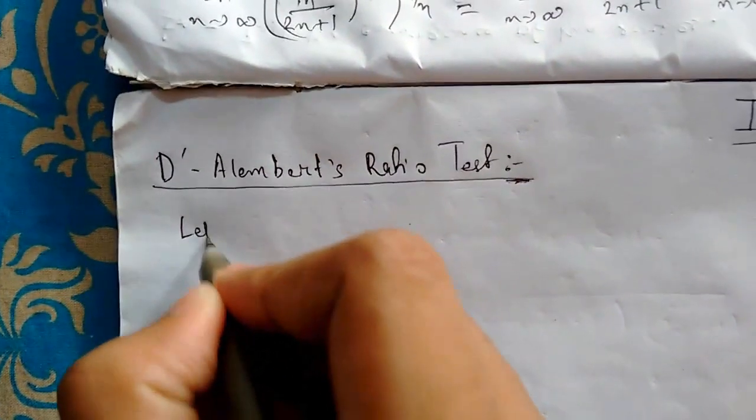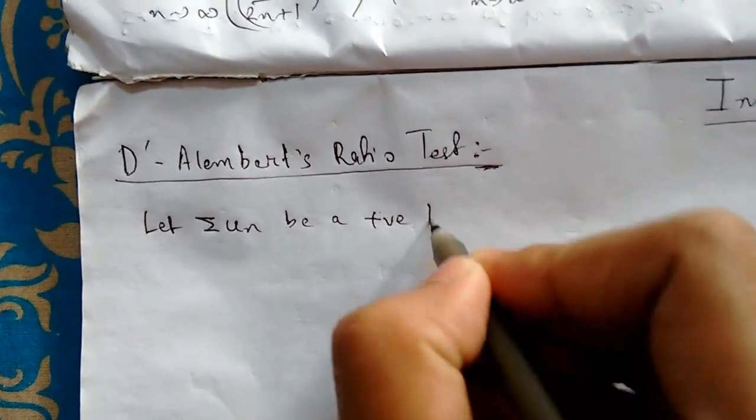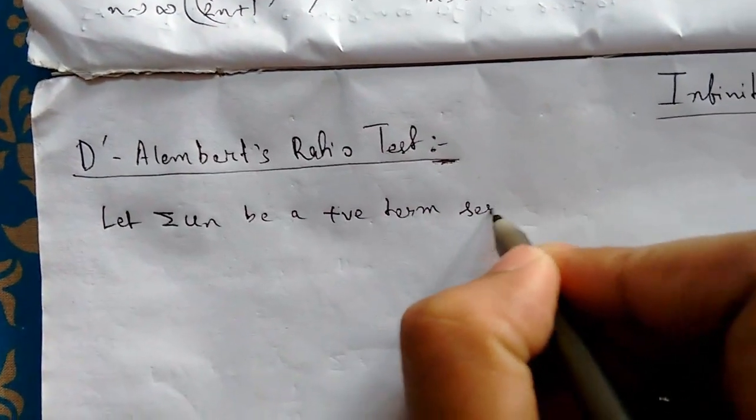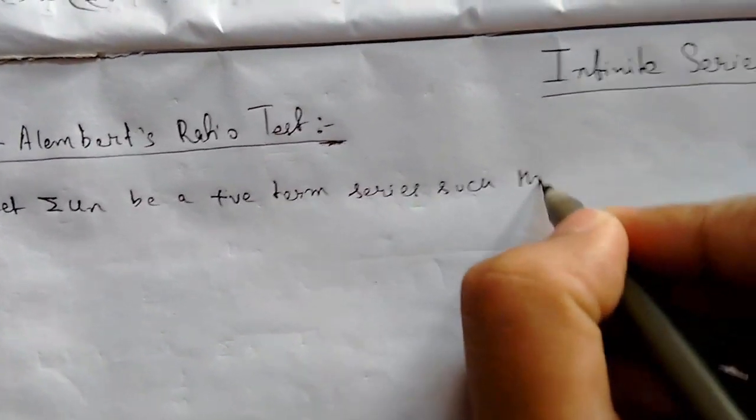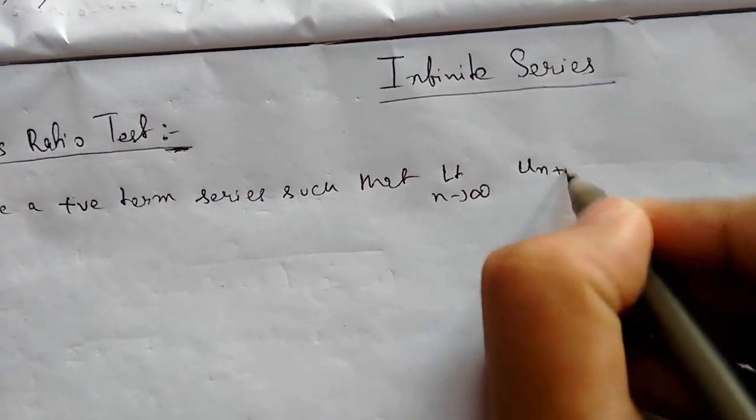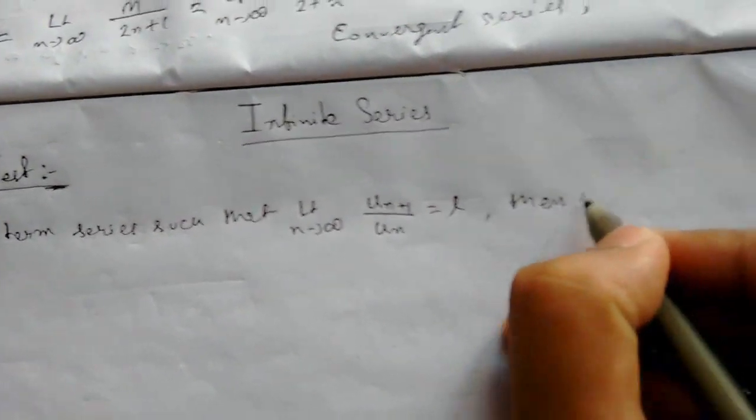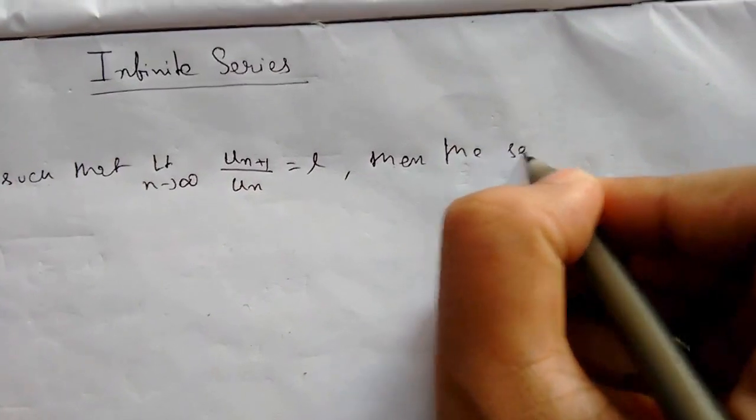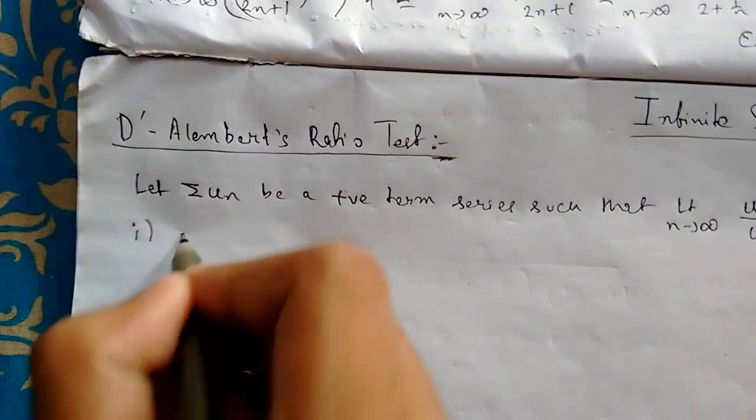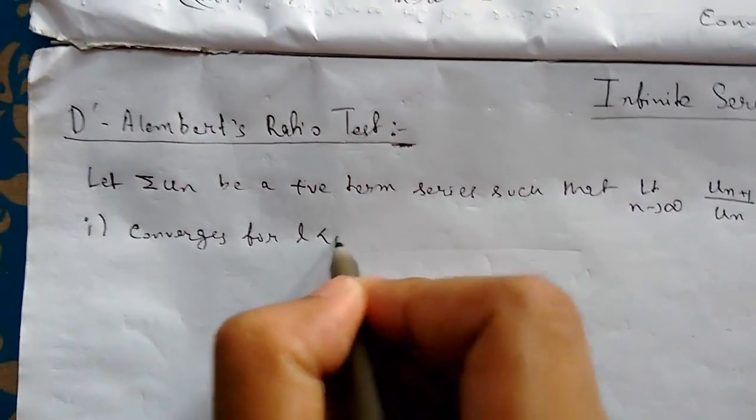Let summation U_n be a positive term series such that limit n tending to infinity of U_(n+1) upon U_n equals L. Then the series: (i) converges for L less than 1.